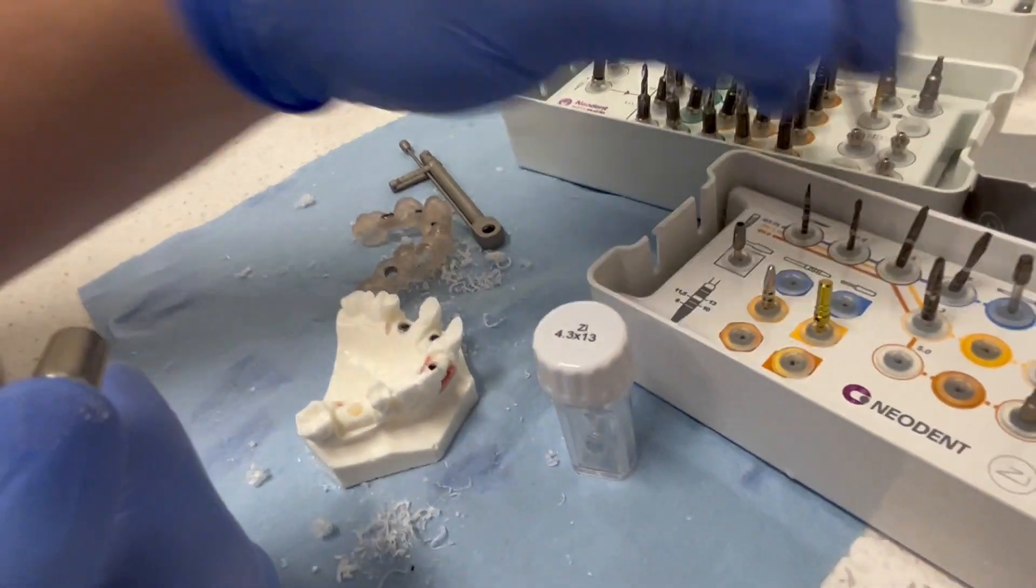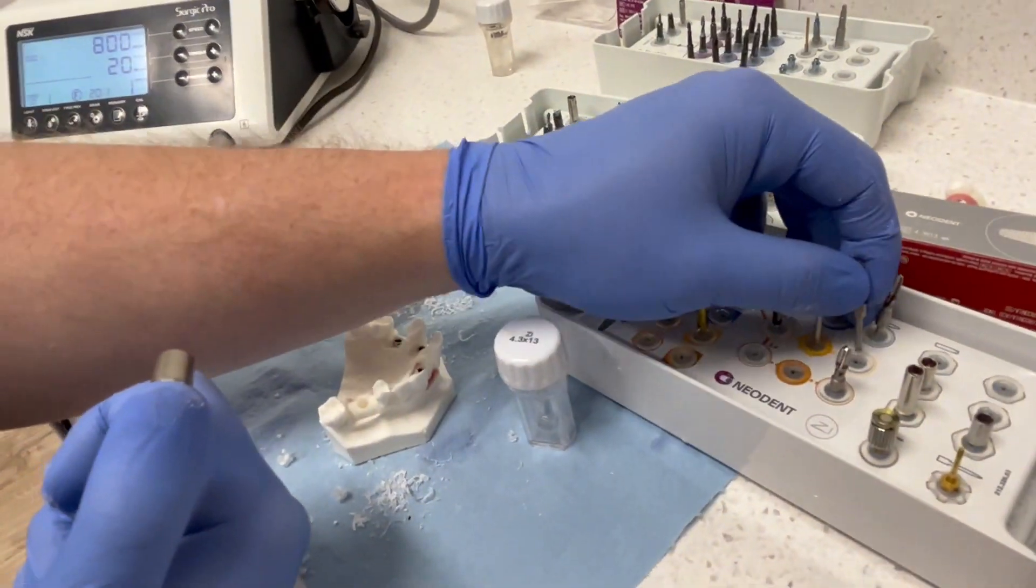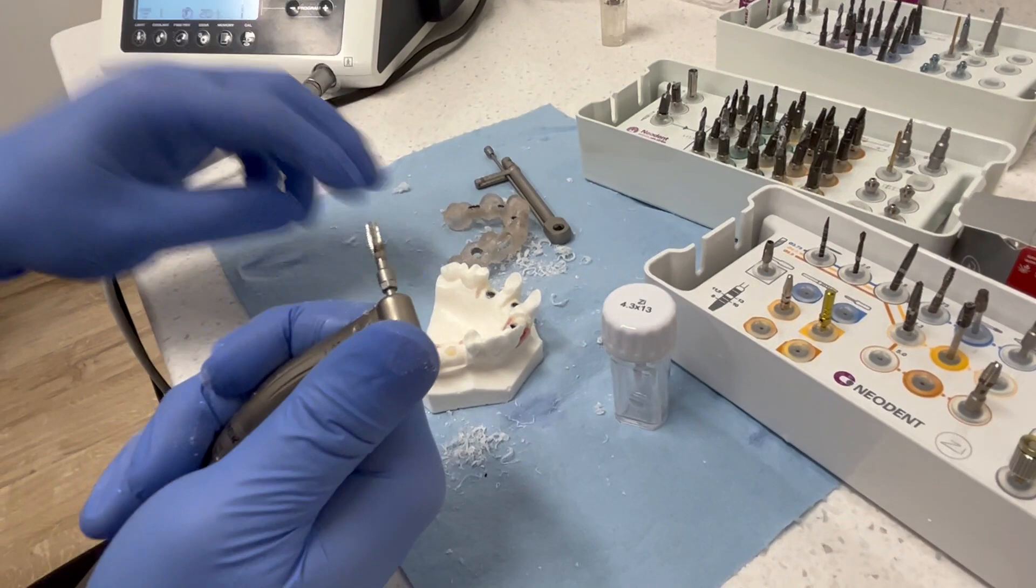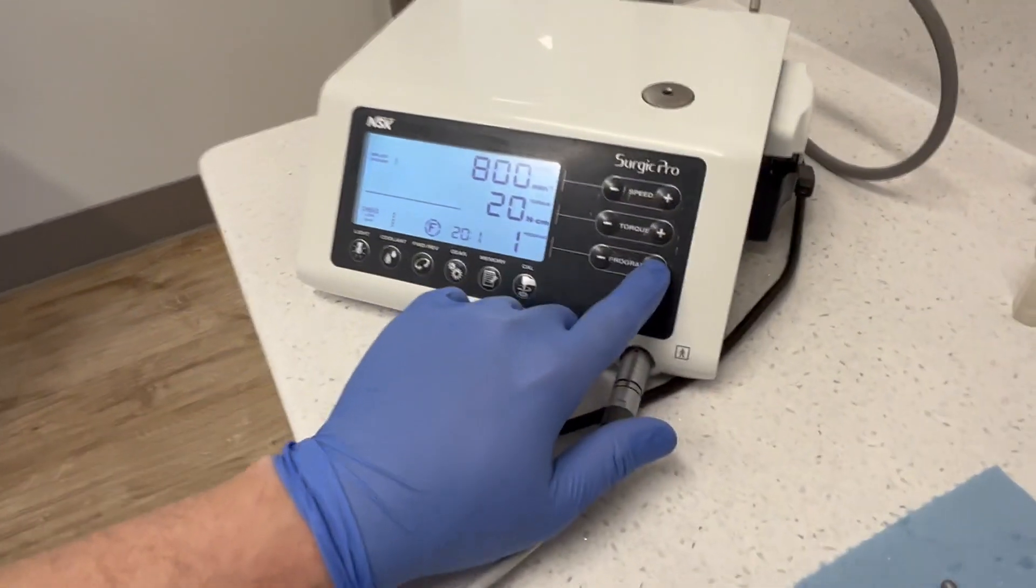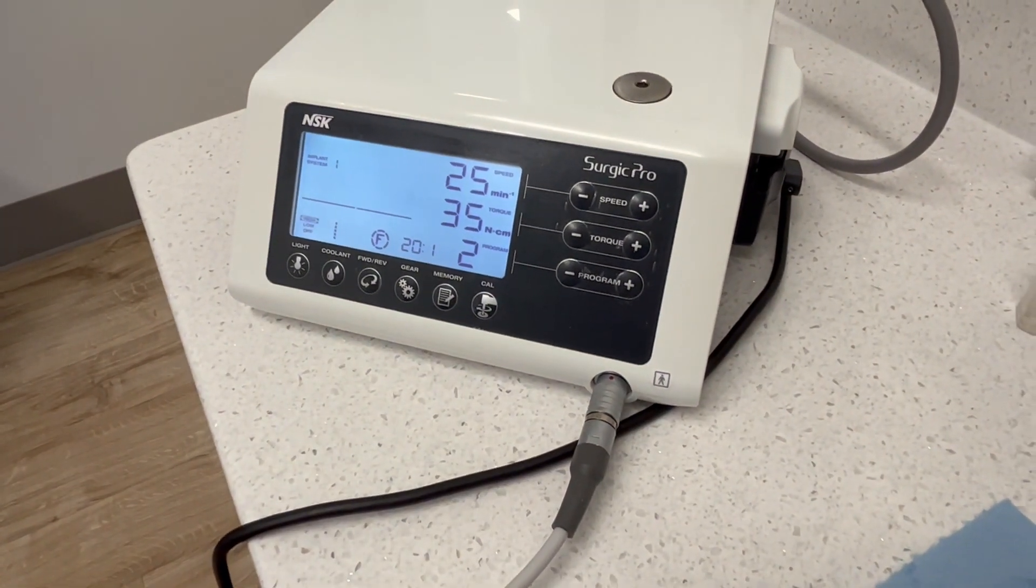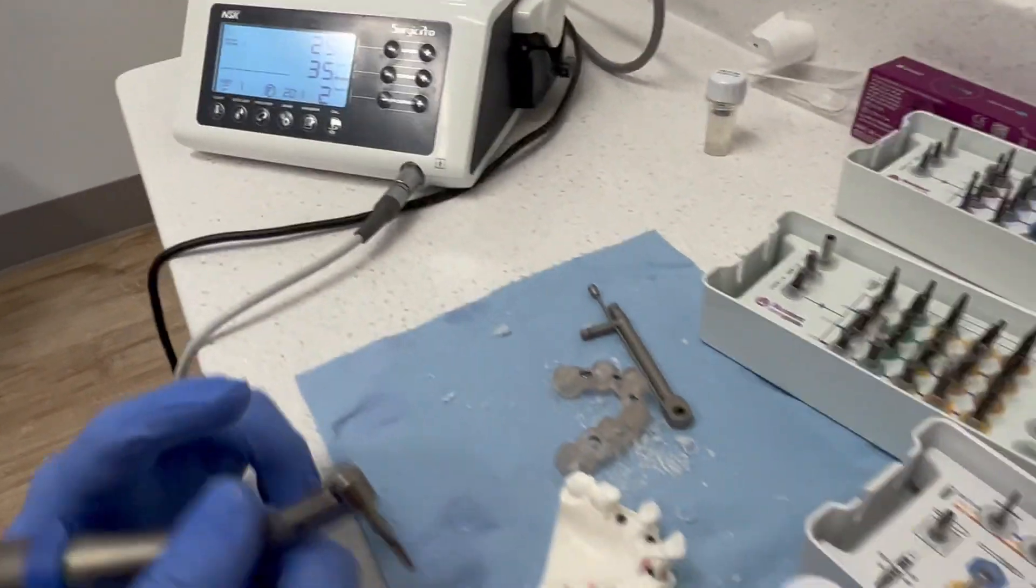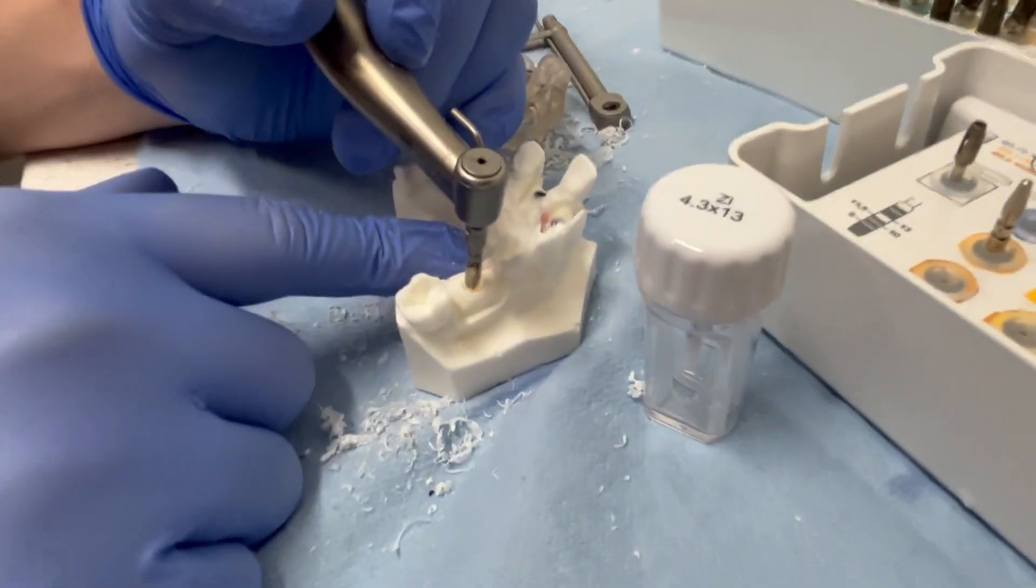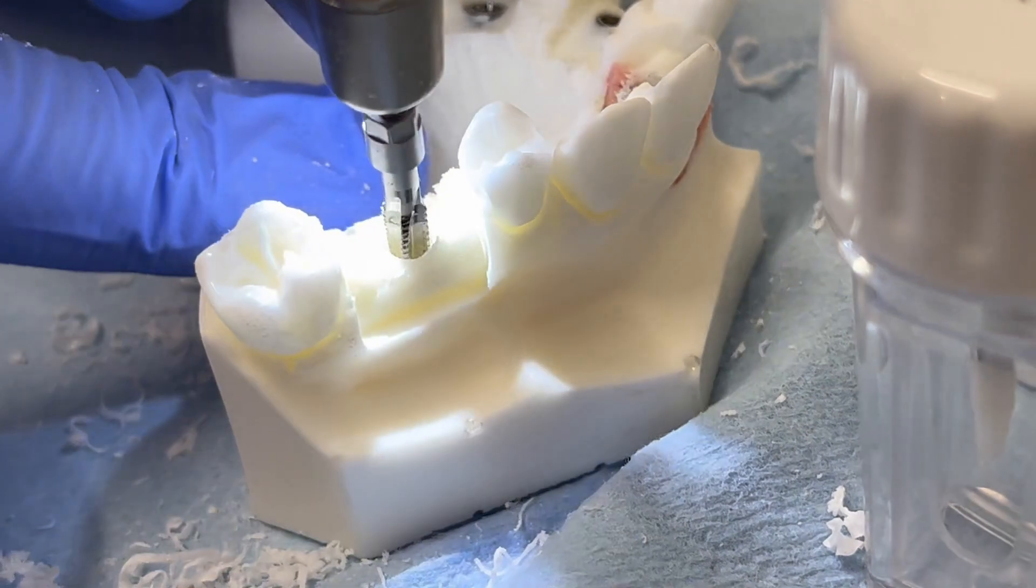Now the big thing is we're going to thread the inside of this osteotomy just like we would with our thread pitch on our implant. So here we want to take this down to 25 RPMs. And we're going to let this kind of guide its own path down to depth to thread this implant osteotomy.